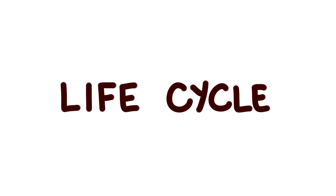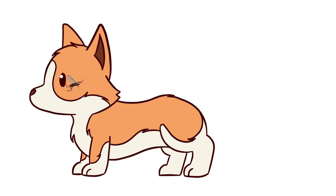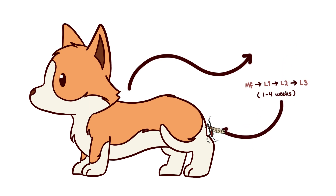The first part of the life cycle happens in the mosquito. The mosquito picks up heartworm microfilariae from an infected host. Inside the mosquito, the microfilariae molt three times into larval stages L1, L2, then L3. This takes about 1–4 weeks. L3 larvae are infective and they migrate into the labium of the mosquito, so that when the mosquito feeds, they are aptly positioned to infect their final host.